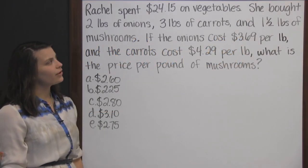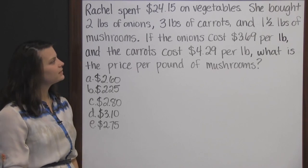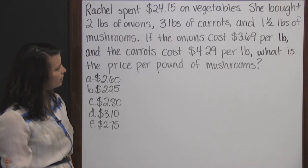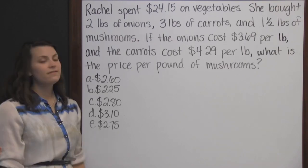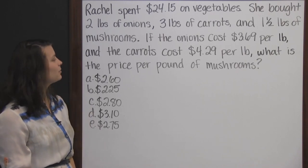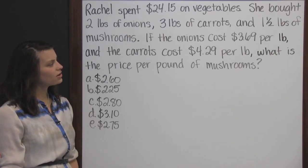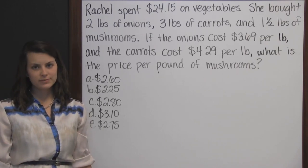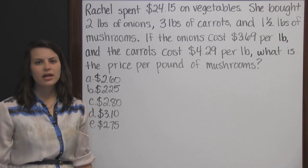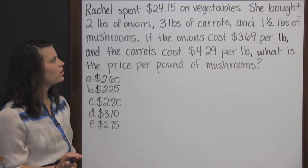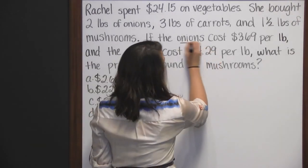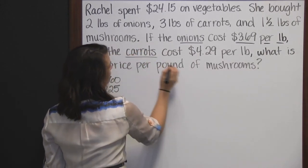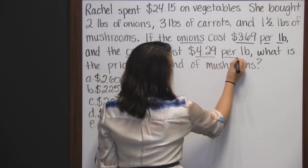Rachel spent twenty-four dollars and fifteen cents on vegetables. She bought two pounds of onions, three pounds of carrots, and one and a half pounds of mushrooms. If the onions cost three dollars and sixty-nine cents per pound and the carrots cost four dollars and twenty-nine cents per pound, what is the price per pound of mushrooms? First, I want to figure out how much money was spent on the onions at $3.69 per pound, and how much was spent on the carrots at $4.29 per pound.